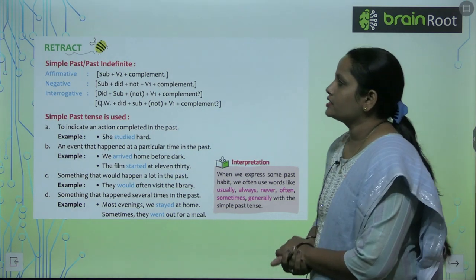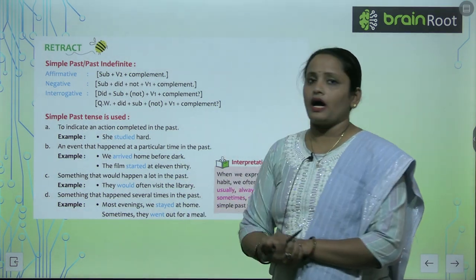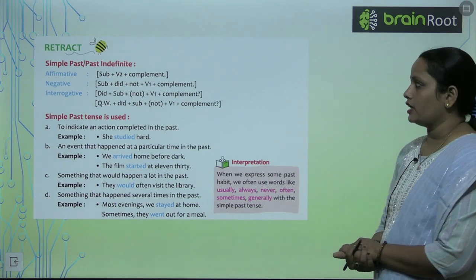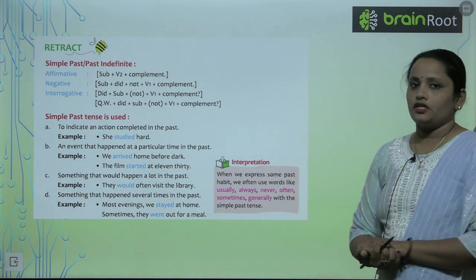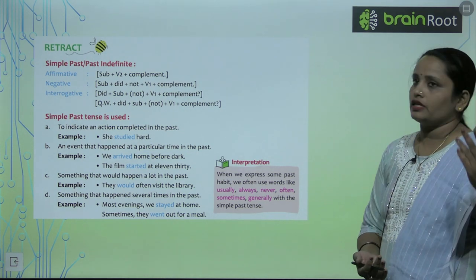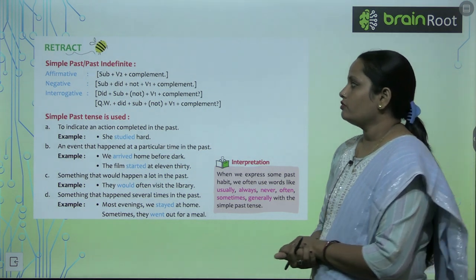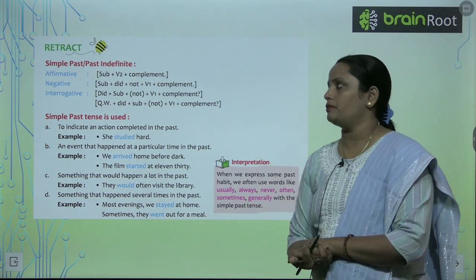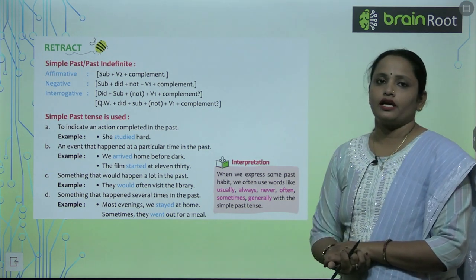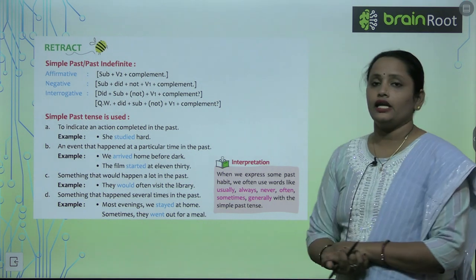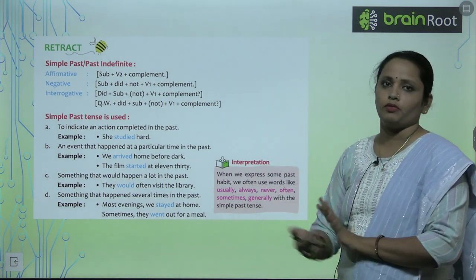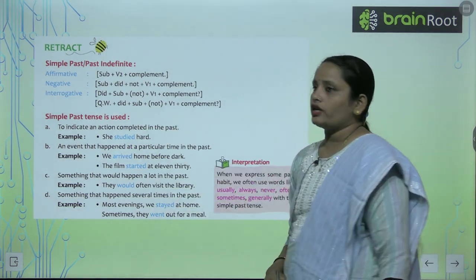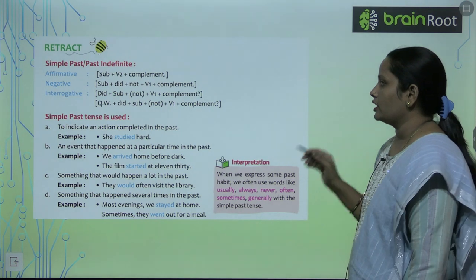Now let's learn about simple past or past indefinite tense. Simple past is also called past indefinite tense. It is also divided into positive, negative, and interrogative. For positive: subject plus the second form of the verb, then complement. For negative: subject plus 'did not' plus the first form of the verb, then complement. In interrogative: 'did', subject, 'not', first form of verb, then complement.